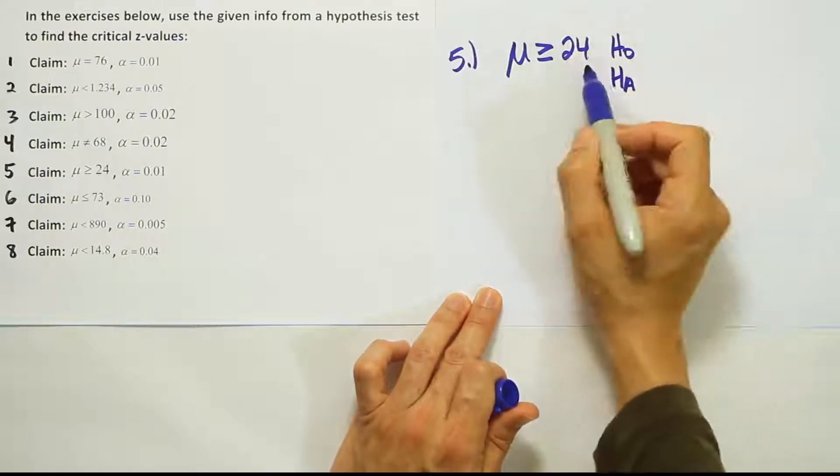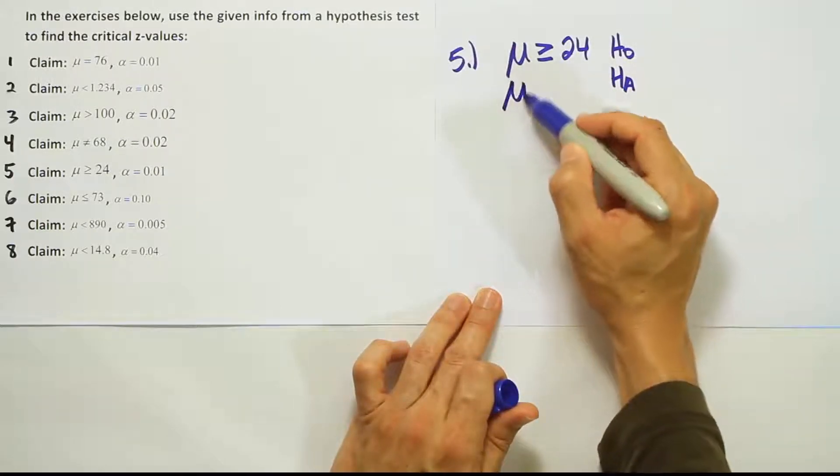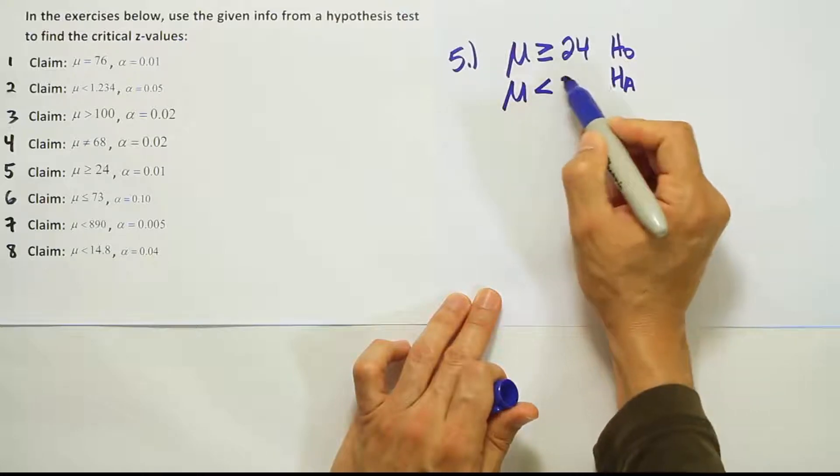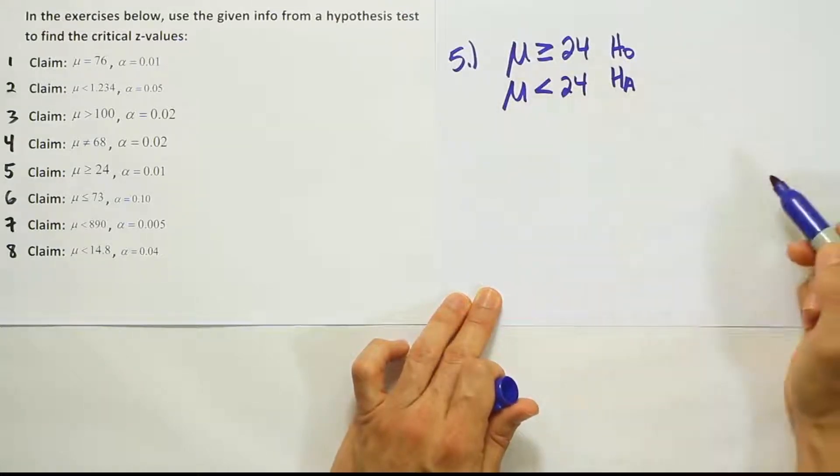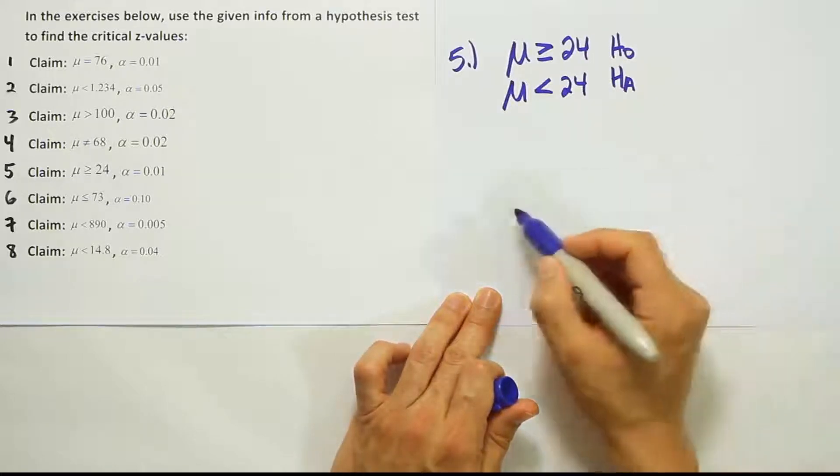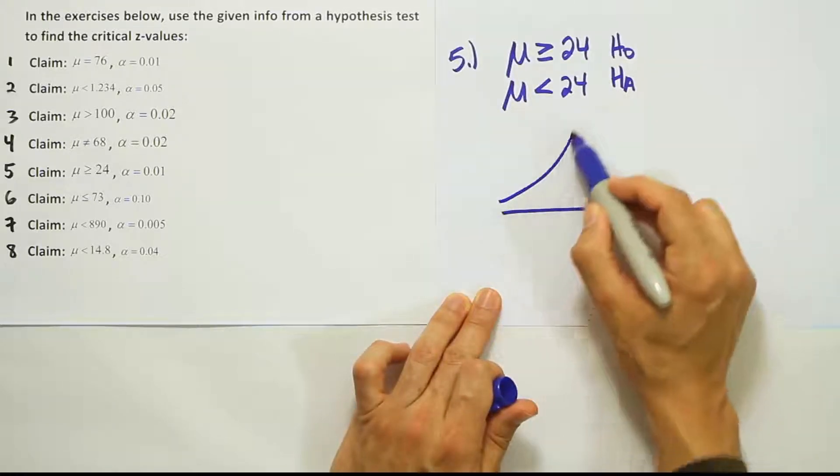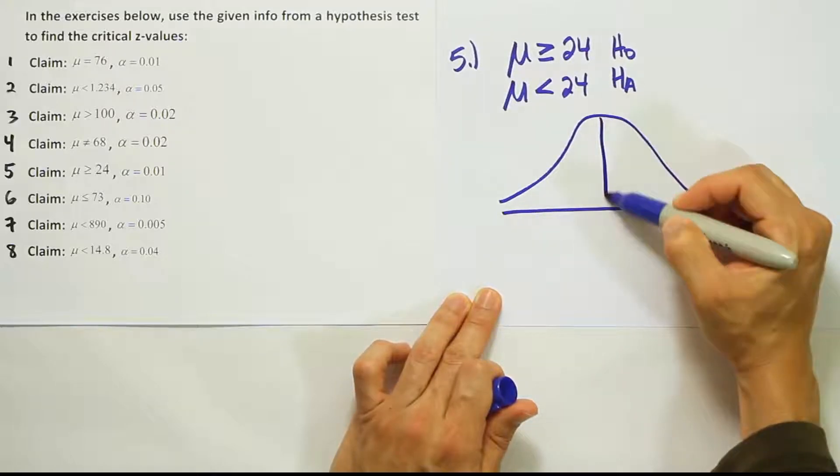So we have to find the alternative hypothesis by doing the complement of that, and that means we'll be dealing with the mean is less than 24. Because if you're not greater than or equal to 24, it must be less than 24. And if that's the case, then we're going to draw a bell curve that has a left tail shaded.